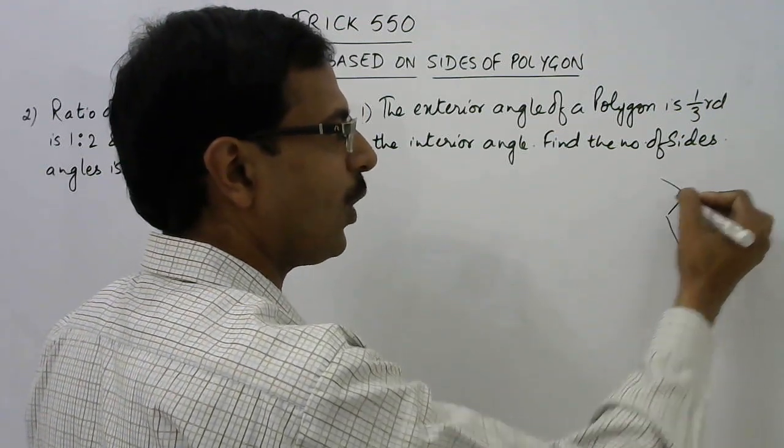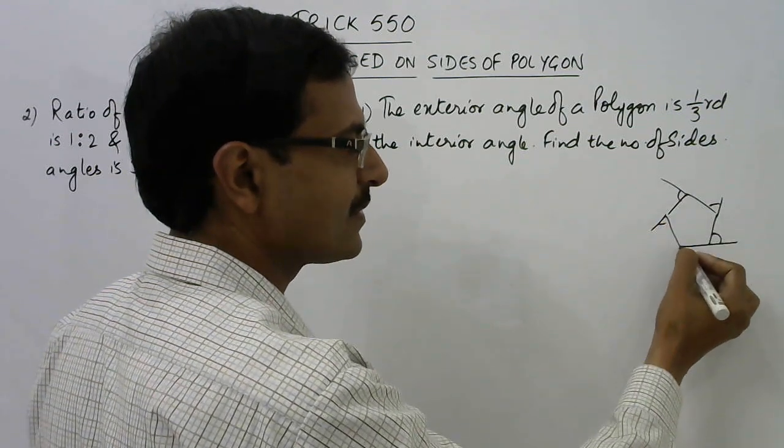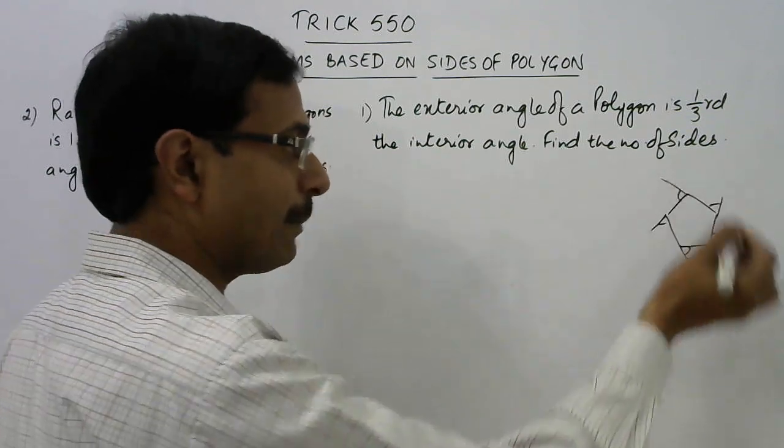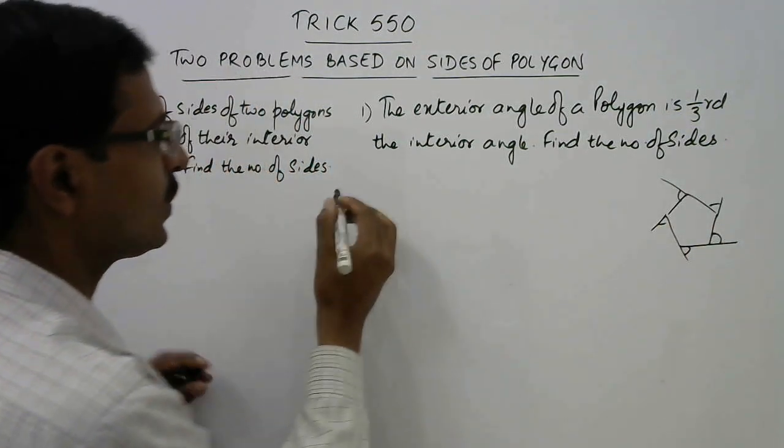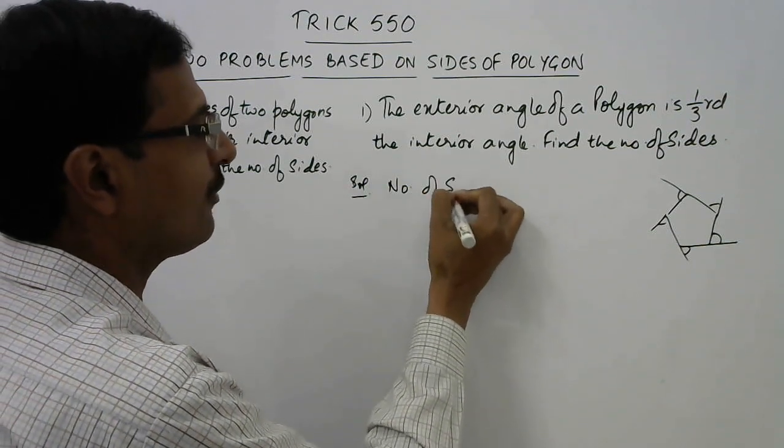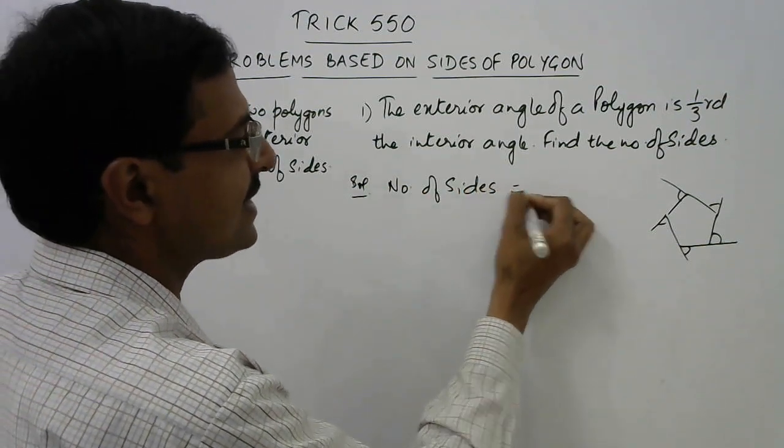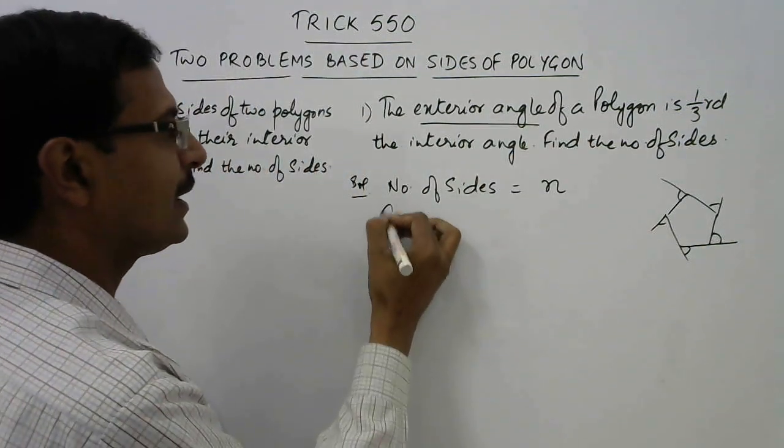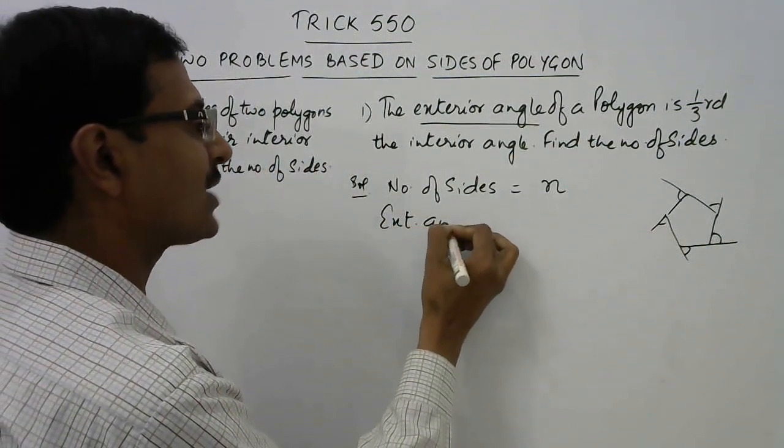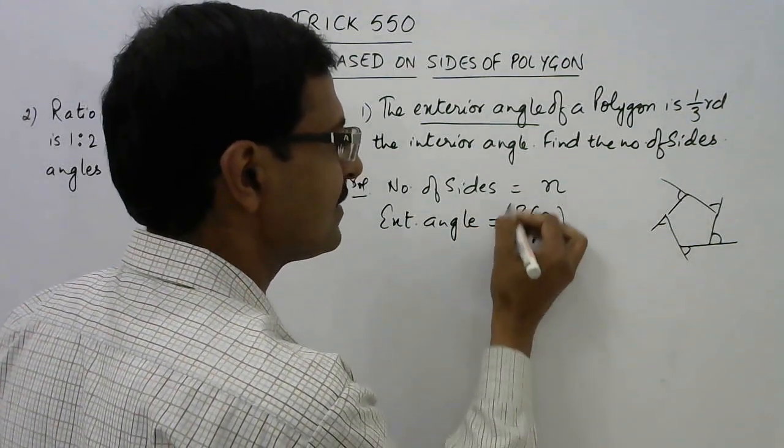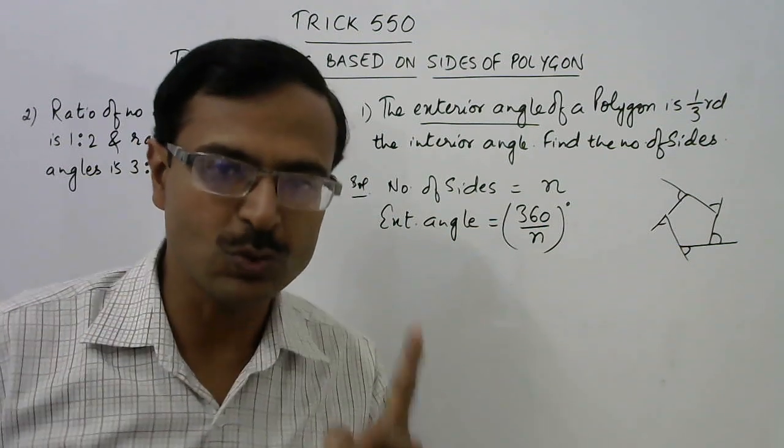The sum of all the exterior angles can be expressed in terms of the number of sides. So if the number of sides of a polygon is n, then the exterior angle is actually 360 divided by n degrees. Now, this is the first concept you need to know.